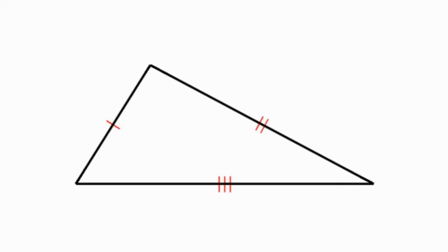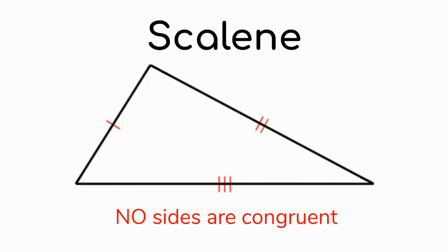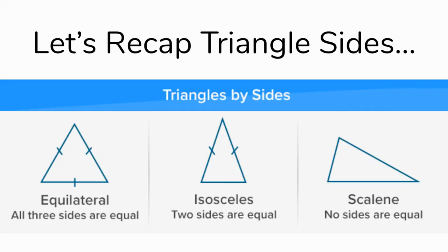This triangle is called a scalene triangle, and scalene means that none of the sides are congruent — they're all different lengths. Let's recap the three new words we've learned to classify triangle sides: if all sides are equal, we say equilateral; if two sides are equal, we say isosceles; and if none of the sides are equal, we classify that triangle as scalene.